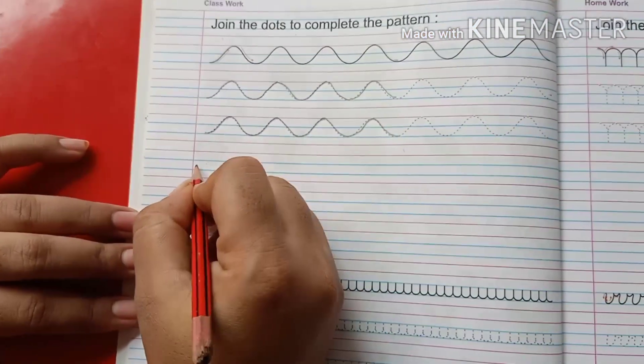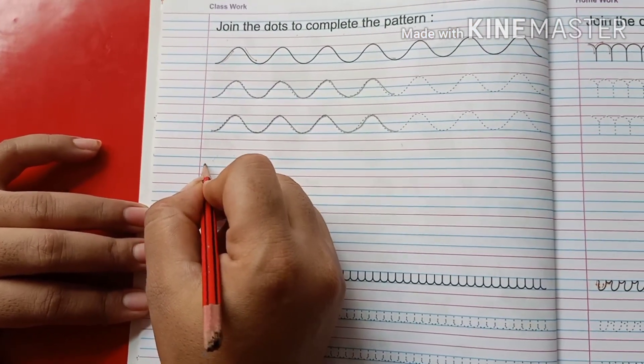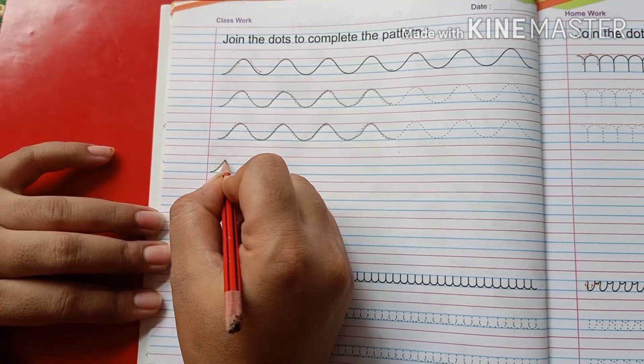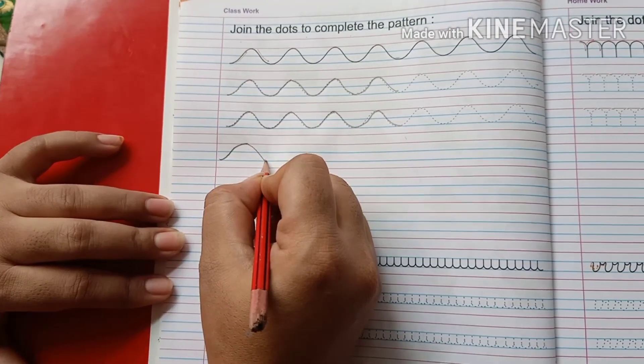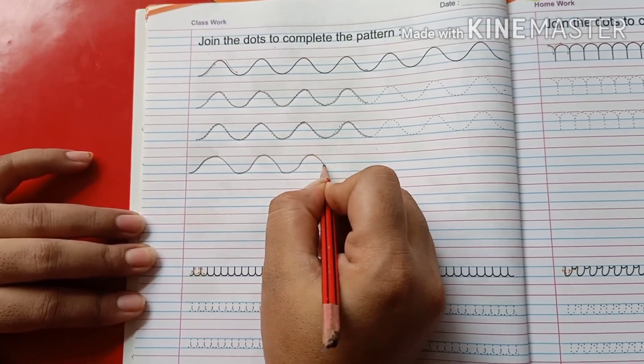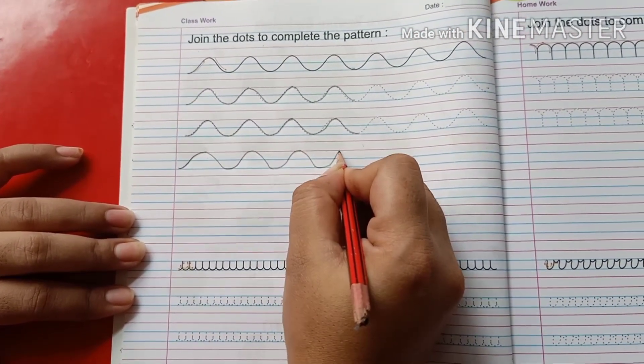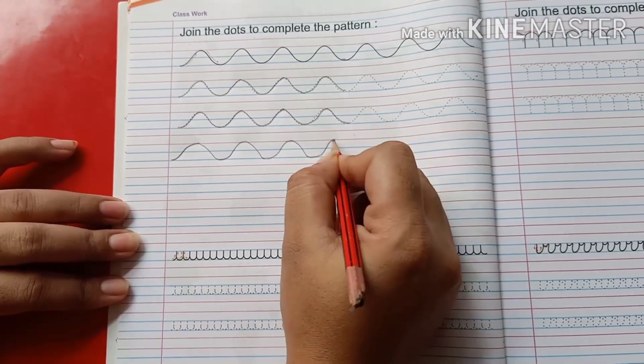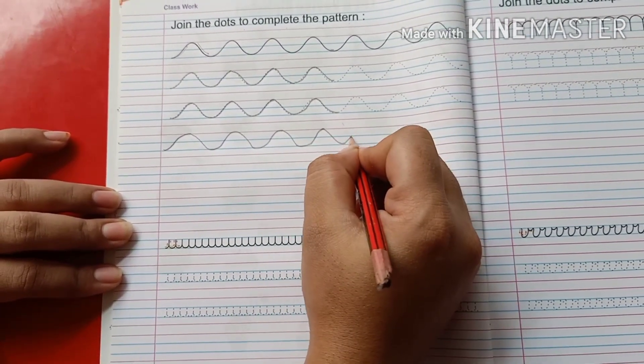Now you have to next line complete it without dots. Make curve, again curve and you have to complete like this pattern.